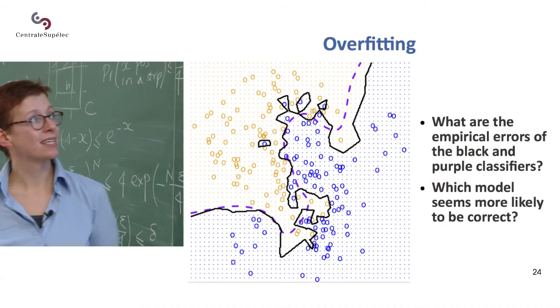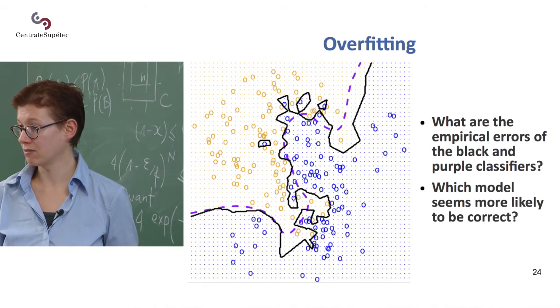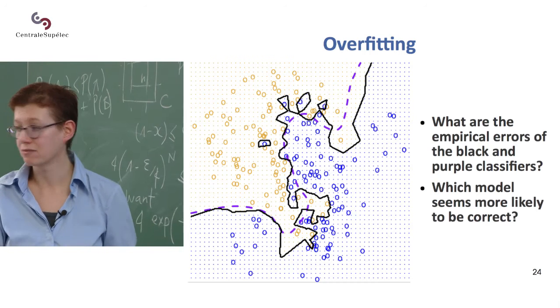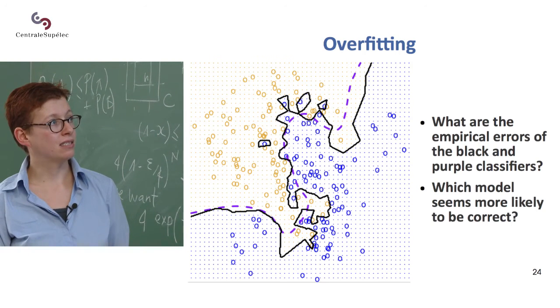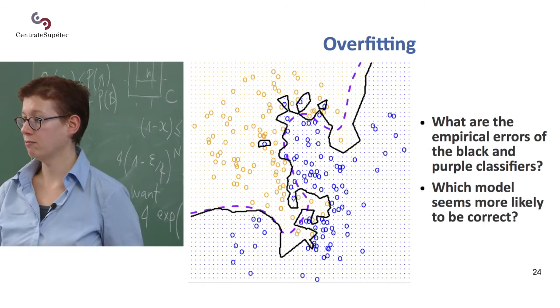Okay. And so, we call this, so we think this black model is unlikely to be realistic, because it's too complicated compared to the dimension of the space, and it's fitting very closely to the data. And we call this overfitting.